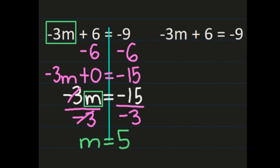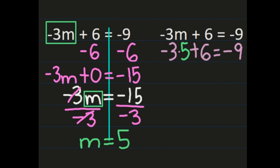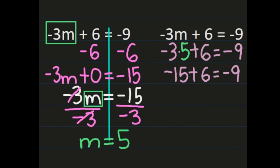Even though we're working with equations with negative numbers, we can still check our answers. To verify that m equals 5, I'll go back to the original equation and substitute positive 5 for m. So: negative 3 times positive 5 plus 6 — does that equal negative 9? Negative times a positive is a negative, so negative 3 times 5 is negative 15. Then negative 15 plus 6: adding integers with different signs, we subtract — 15 minus 6 is 9 — and keep the sign of the larger absolute value, which is the negative 15. So negative 9 equals negative 9, confirming m equals 5 is correct.